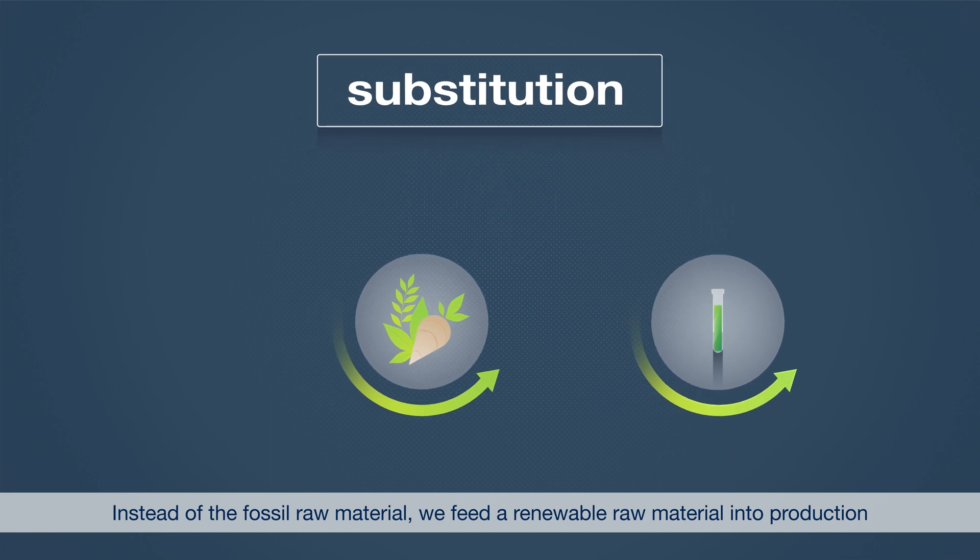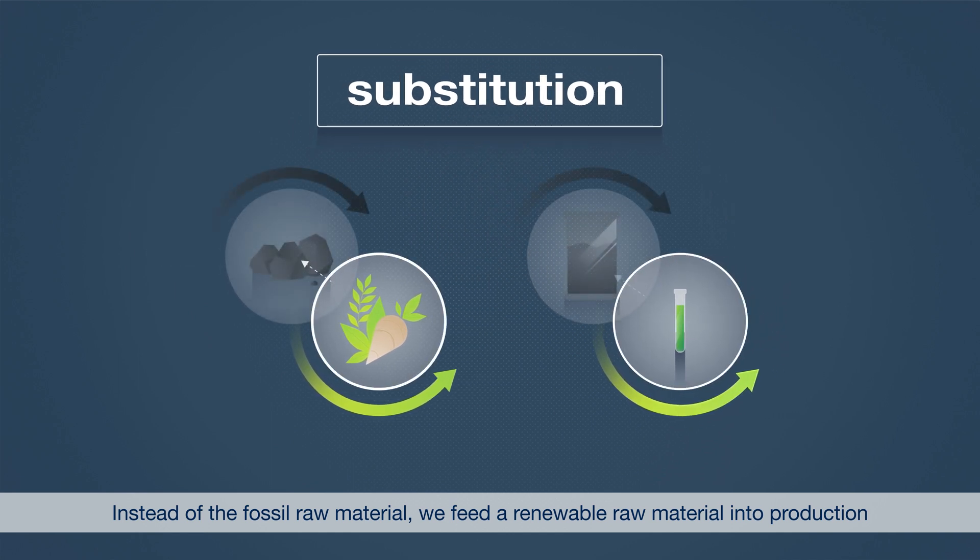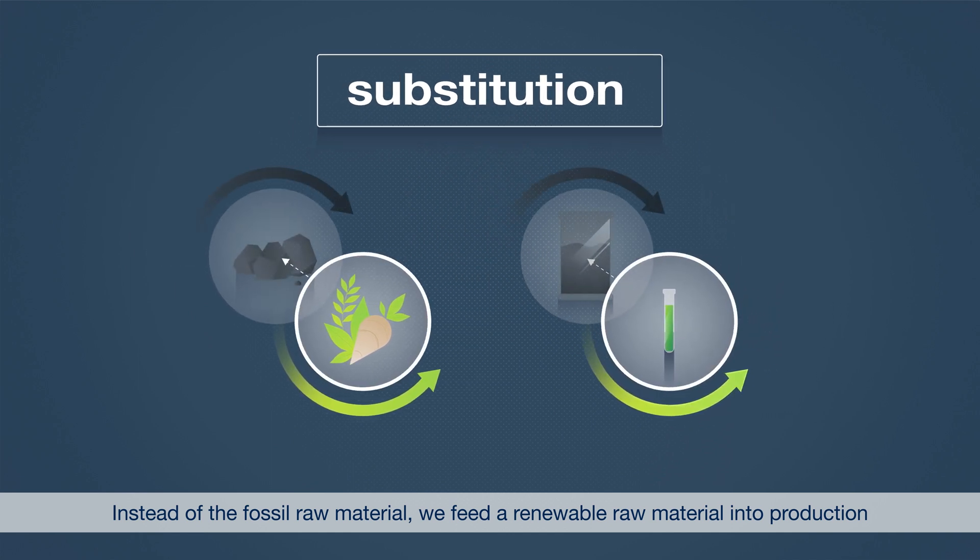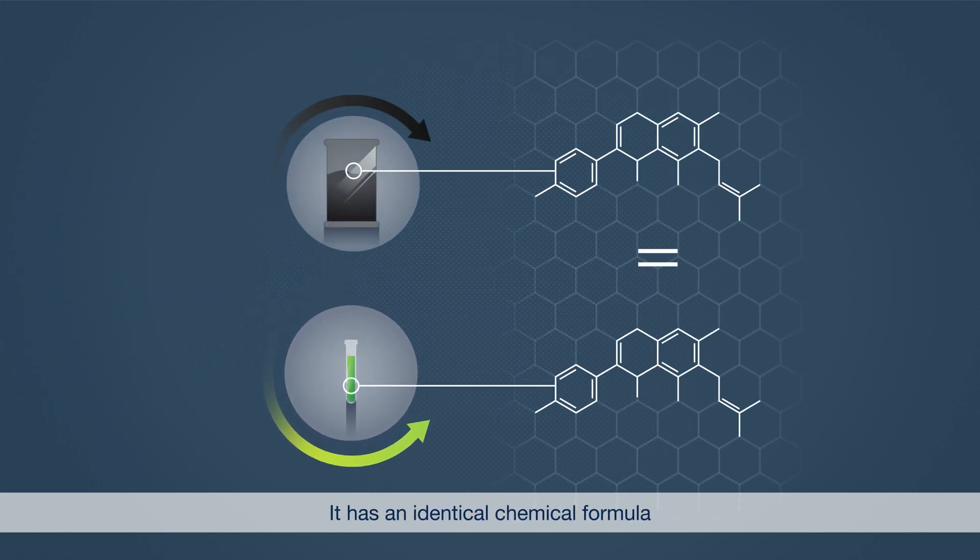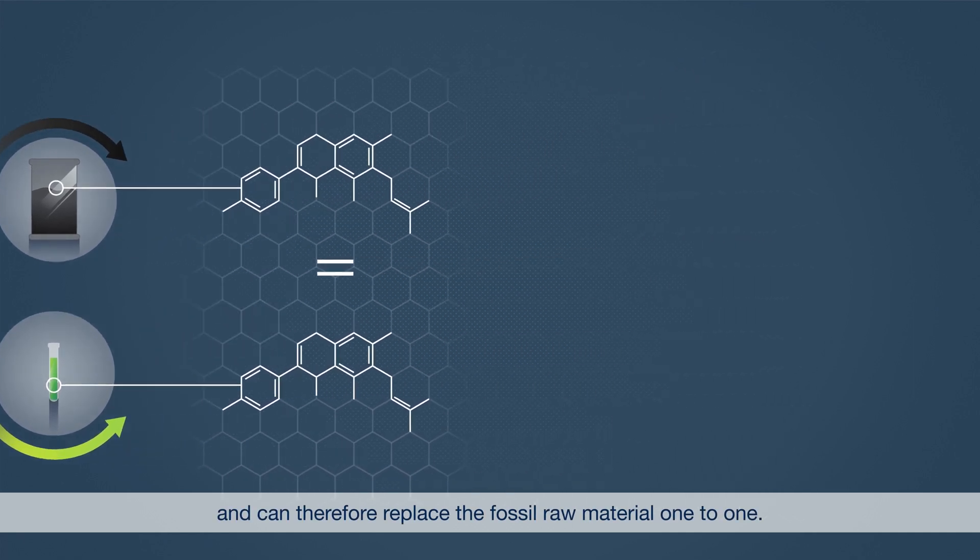Instead of the fossil raw material, we feed a renewable raw material into production. A more sustainable twin, so to speak. It has an identical chemical formula and can therefore replace the fossil raw material one-to-one.